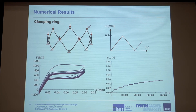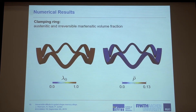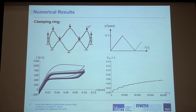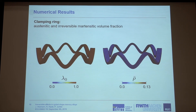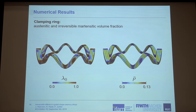Another example is given by this clamping ring, which is also cyclically loaded. Here we can see the resulting stress-strain diagram again with a randomly chosen set of initial Euler angles. The initial choice was not optimal, but we can again see the convergence of our material and the decrease of the plateau stresses. We can also see the transformation from the austenite and in the same areas the formation of irreversible martensite over 10 load cycles, and the areas which are not transforming become smaller with time.